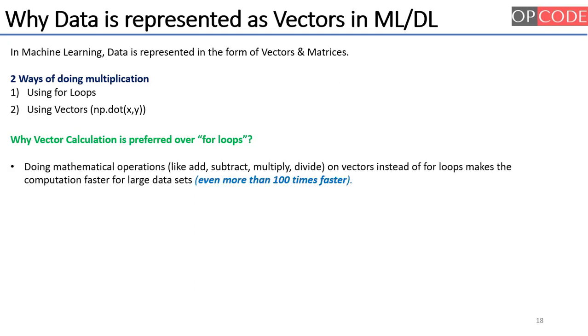The first reason is doing mathematical operations like add, subtract, multiply or divide on vectors instead of for loops makes the computation faster for large data sets, even more than 100 times faster. Yes, even more than 100 times. And we will see this in the Jupyter Notebook. Less number of code lines are required to do mathematical operations on vectors and matrices, and code looks more clean.